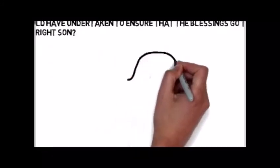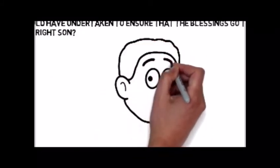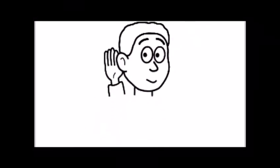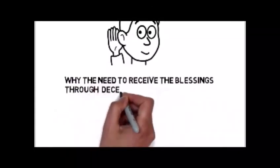She could have simply informed her husband about the wicked deeds of his oldest son Esau. Was there a breakdown in communication between husband and wife, between Yitzchak and Rivka? Why the need to receive the blessings through an act of deception and trickery?